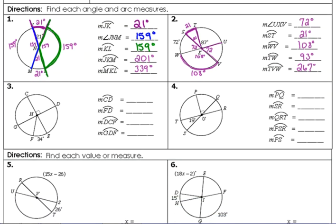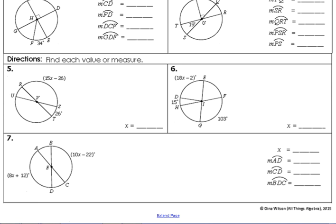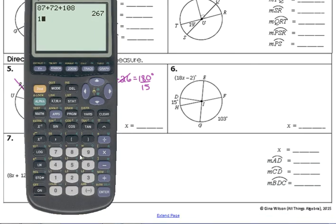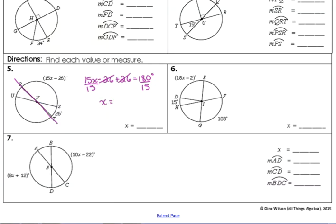I'm going to skip three and four because I think we've got that part of it. Let's look at when they throw some variables in there. Find each value or measure. On number five, they're just asking us to find X. X is the arc from R to S. R to T is a diameter, so that cuts it in half. From R to S plus from S to T, that's going to give us half the circle, which is 180 degrees. So the minus 26 and the plus 26 cancel. Then divide by 15. 180 divided by 15 is 12. So X equals 12.